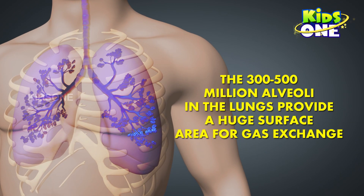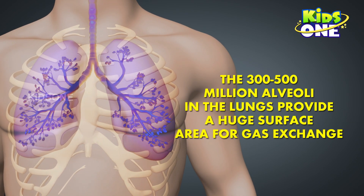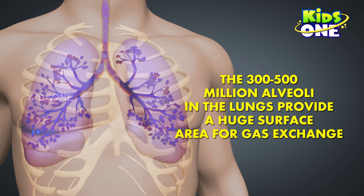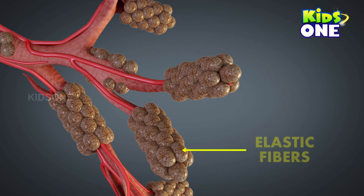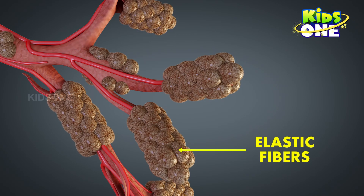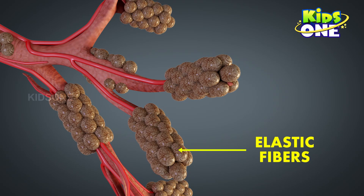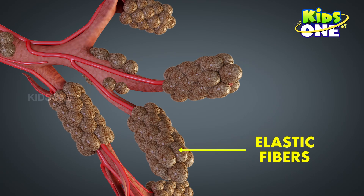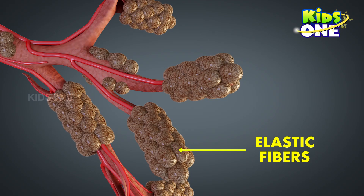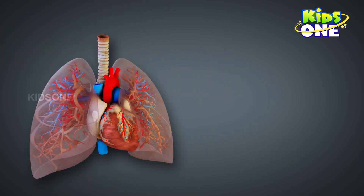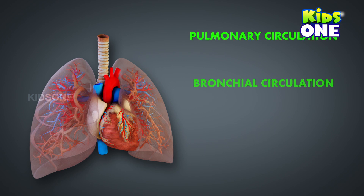Together, 300 to 500 million alveoli in the lungs provide a huge surface area for gaseous exchange. Elastic fibers allow the alveoli to expand on inhalation and spring back to their original shape on exhalation to expel carbon dioxide. The lungs have a unique blood supply with two forms of circulation: pulmonary and bronchial.